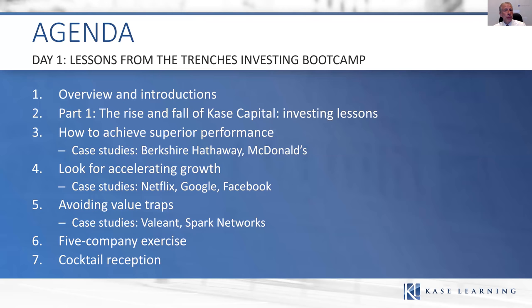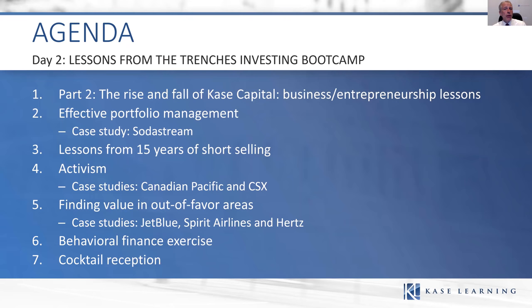Even as value guys, we find value in growth sometimes, and finding companies with accelerating growth is a good way to make money. So we teach Netflix, Google, and Facebook. Then we pivot to avoiding value traps, because doing well as an investor is both a function of picking good stocks that go up, but also avoiding value traps that can blow you up. We have Valeant, which is probably the biggest value trap in history, and a small cap value trap called Spark Networks. The second third of the program covers the rise and fall of Case Capital, teaching the business and entrepreneurship lessons — the many things we did right, and then the things we did to screw that up. Then we talk about portfolio management: how do you size positions, what do you do when a stock is running up, when do you trim it, when do you exit, and critically, what do you do when a stock is running against you.